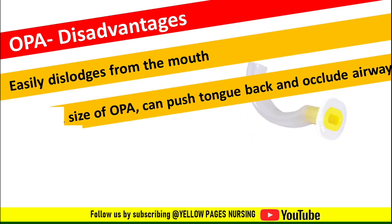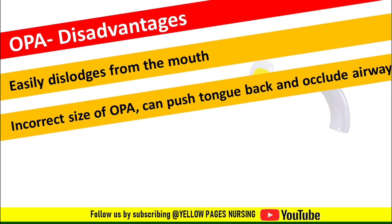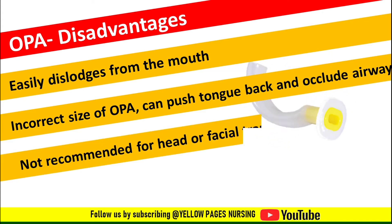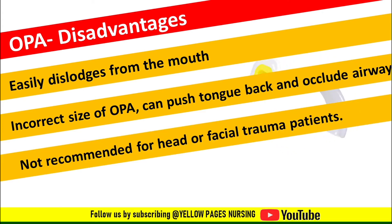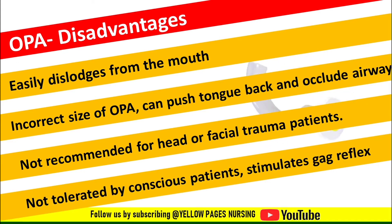An incorrect size of OPA can push the tongue back and occlude the airway — whether it is smaller or larger in size. It is not recommended for head or facial trauma patients. It is not tolerated by conscious patients because it stimulates the gag reflex.